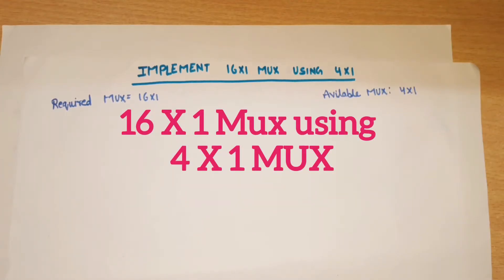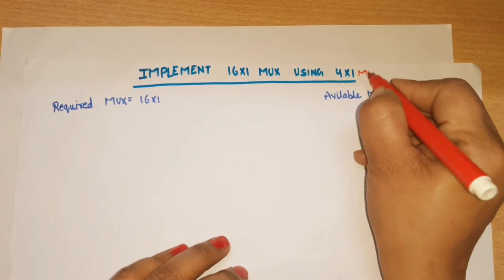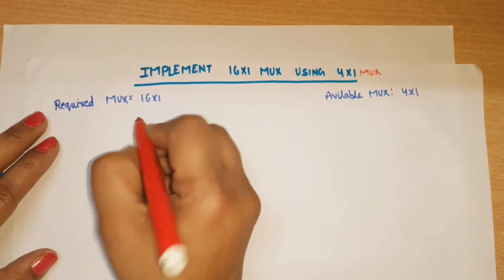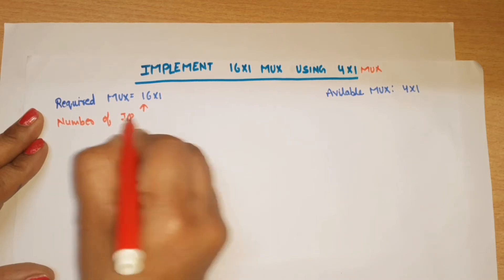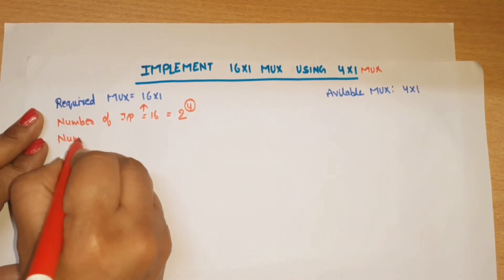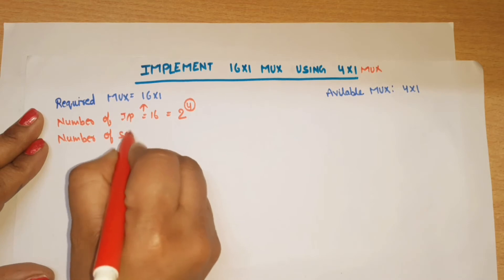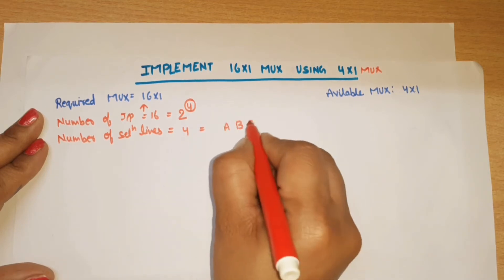In this video I am going to discuss how we can implement a 16-to-1 mux using 4-to-1 mux. I have already discussed multiplexer tree, so this is one more example. The required mux is 16-to-1 and the available IC is a 4-to-1 mux. We follow the same procedure: the number of inputs is equal to 16, which can be written as 2 to the power 4, meaning the number of selection lines is equal to 4. We will use 4 variables: A, B, C, D.